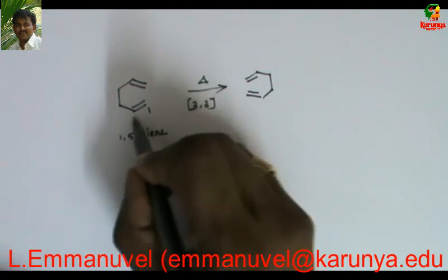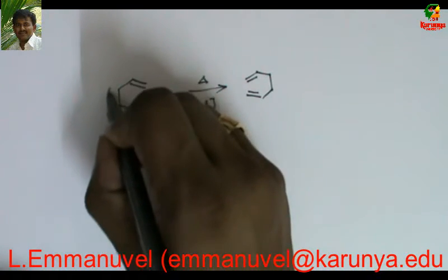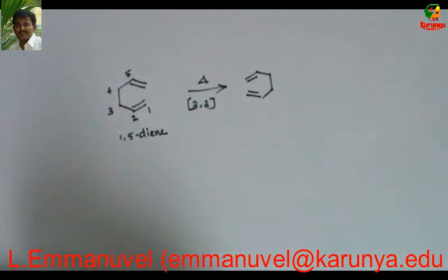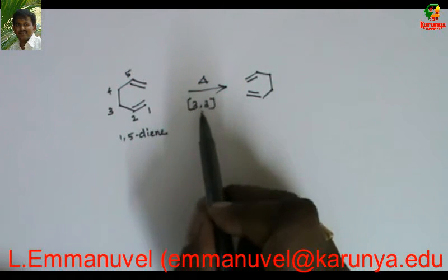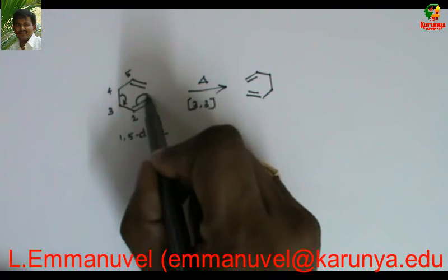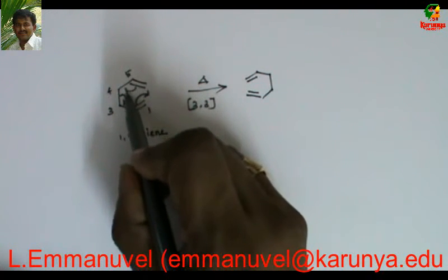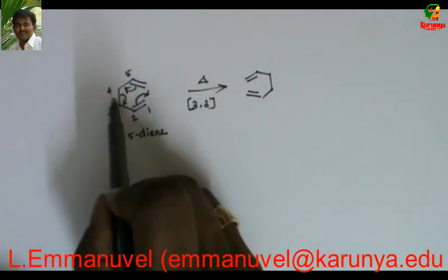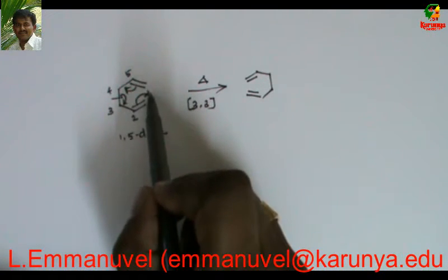The numbering goes like this. It undergoes 3,3-sigmatropic. That is, this bond is broken and a new bond is formed here and this bond falls here. The bond is broken here and a new bond is formed here.